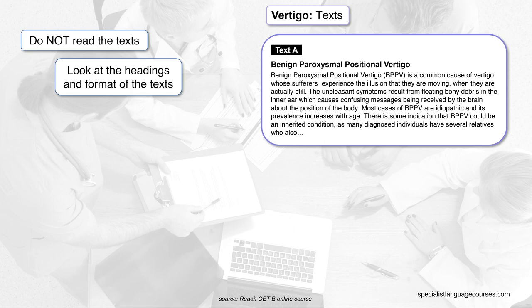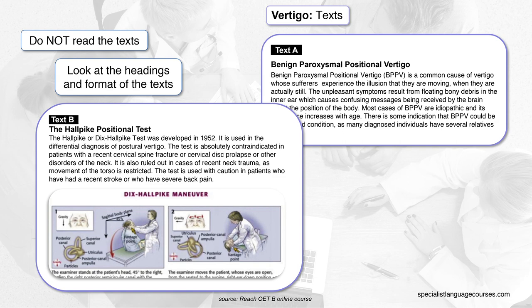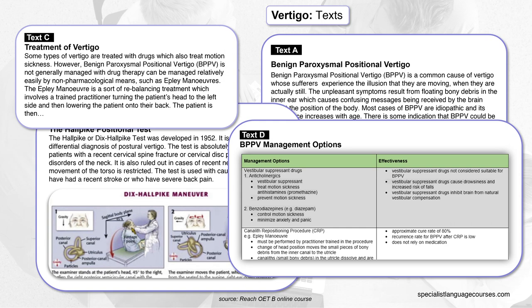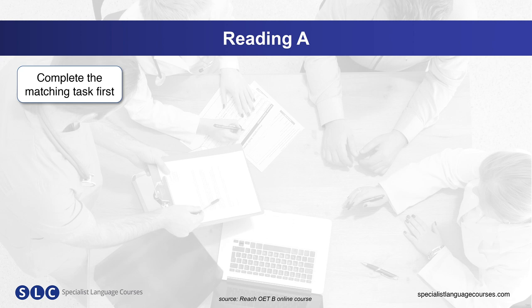Here we can see that Text A is a description of benign paroxysmal positional vertigo, or BPPV — what it is and who it affects. Text B is about the Hallpike positional test, which is a diagnostic tool for vertigo, and this text contains a visual. Text C talks about the treatment of vertigo focusing on BPPV, and Text D is a table of management options for the condition and their effectiveness.